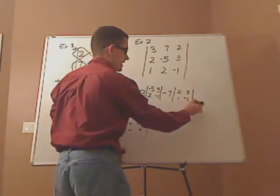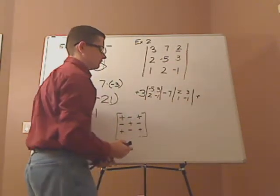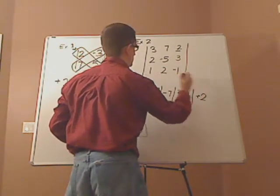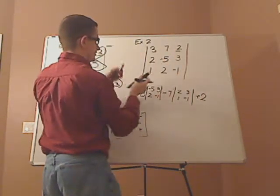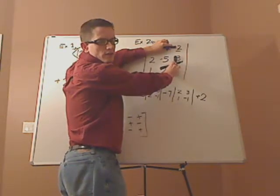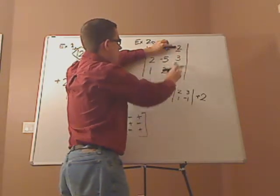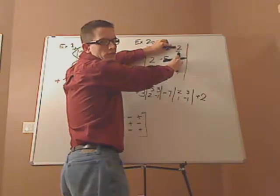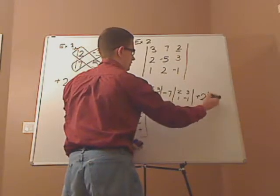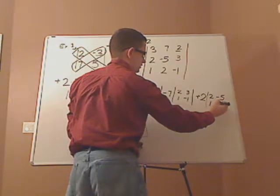Then you have your last matrix. The scalar in front is a 2. You look at what's being blocked out — since it's in row 1, column 3, those are blocked out. So you're left with the sub-matrix: 2, 2, negative 5, 1, 2.